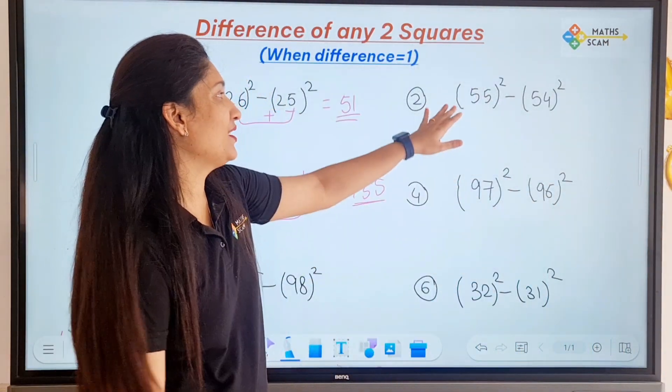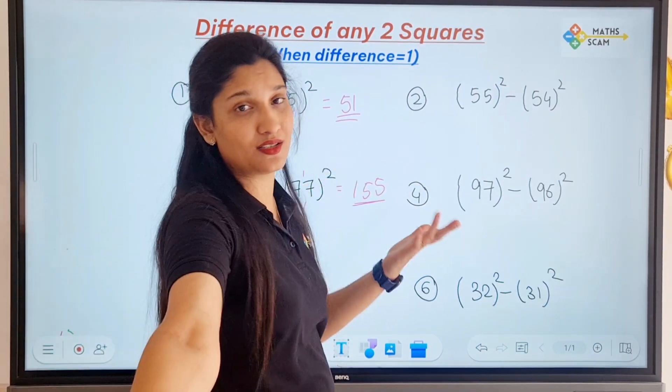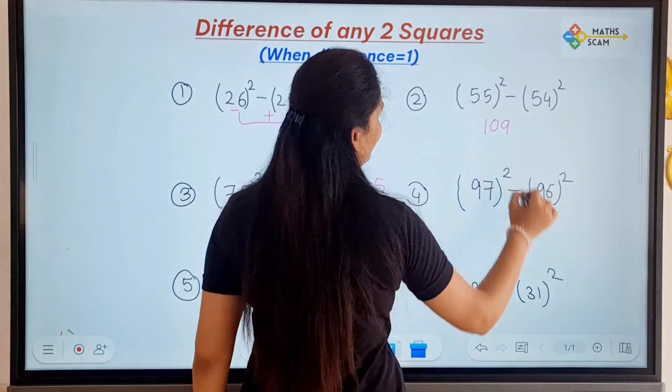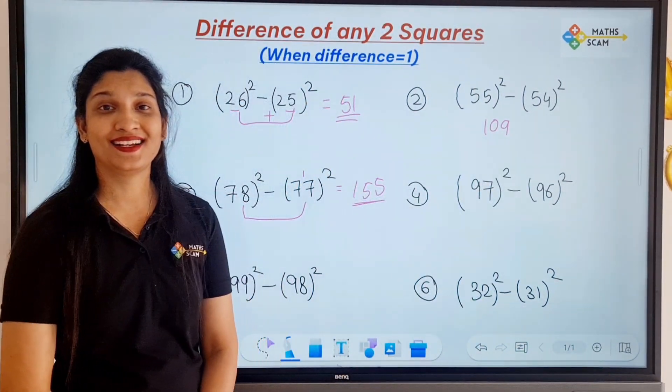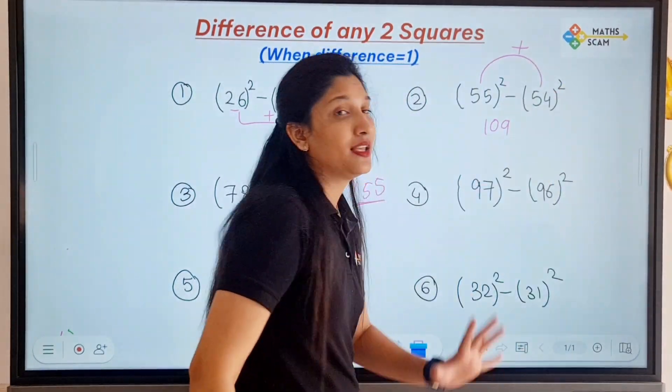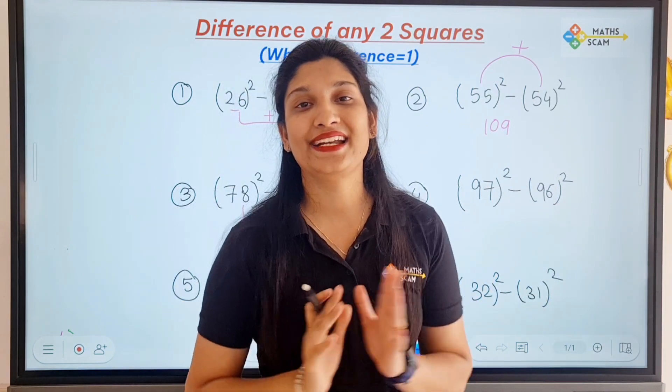Next question: 55² minus 54². Now most of you have given the answer too, so answer is 109. Just do addition of these two numbers. You don't have to calculate the square, don't have to find the difference, just do the addition.